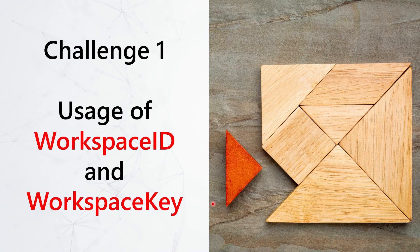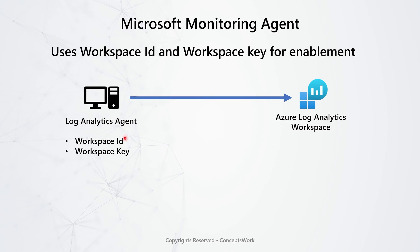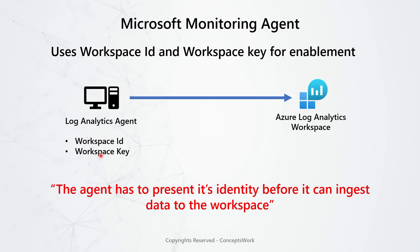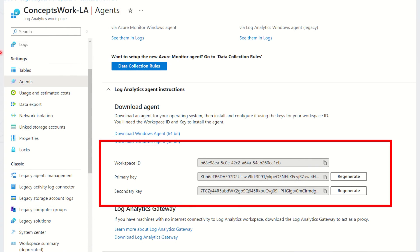The first challenge was related to enablement of the agent itself. Whenever the Log Analytics Agent is installed on a machine, it needs a Workspace ID and Workspace Key to communicate with the workspace. You need to make sure you have methods to protect these credentials. The agent has to present its identity before it can ingest data to the workspace. If you navigate to portal.azure.com, select any workspace, and click on Agent, you can retrieve the Workspace ID and Workspace Key. Since this information is available to anyone who can access the workspace, it was considered a security concern.